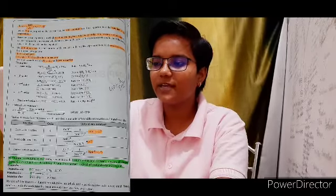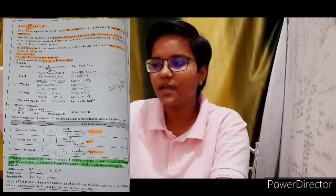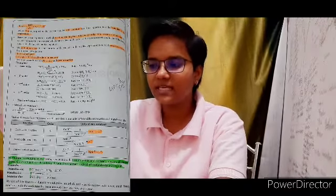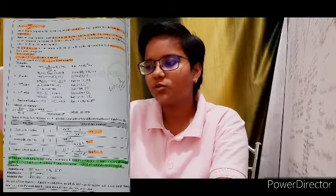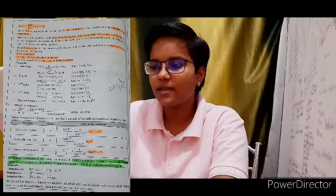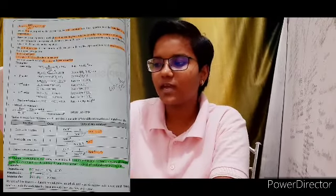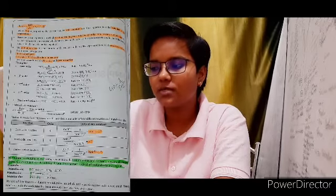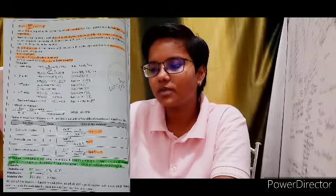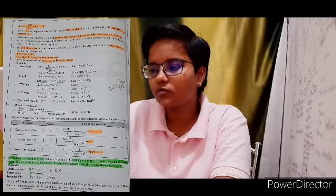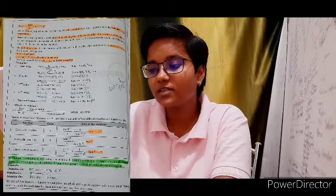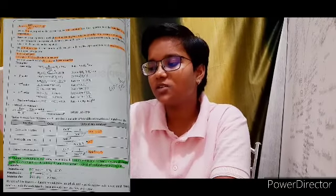Examples by order: Zero order — 2NH₃ (Pt, 1130 K) → N₂ + 3H₂, rate = K; H₂ + Cl₂ (sunlight) → 2HCl, rate = K. First order — 2N₂O₅ → 4NO₂ + O₂, rate = K[N₂O₅]; NH₄NO₂ → N₂ + 2H₂O, rate = K[NH₄NO₂]. Second order — 2NO₂ → 2NO + O₂, rate = K[NO₂]²; H₂ + I₂ → 2HI, rate = K[H₂][I₂]. Third order — 2NO + O₂ → 2NO₂, rate = K[NO]²[O₂]; 2NO + Cl₂ → 2NOCl, rate = K[NO]²[Cl₂]. Fractional order — CH₃CHO → CH₄ + CO, rate = K[CH₃CHO]^(3/2).